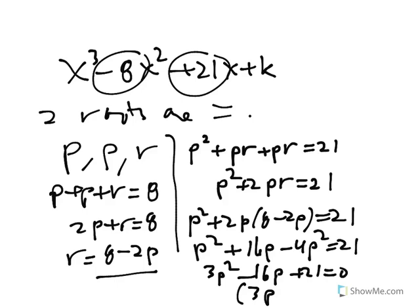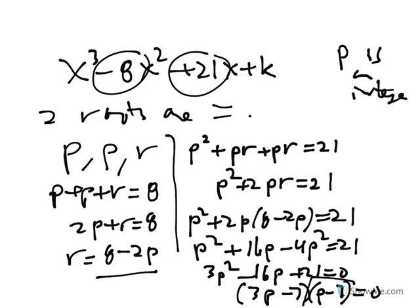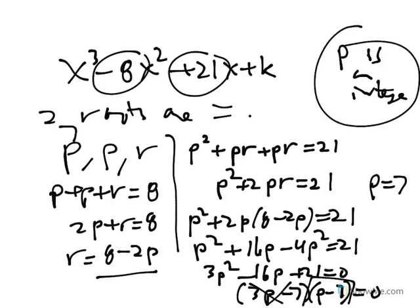This eventually turns into 3p squared minus 16p plus 21 equals 0, which factors into (3p minus 7)(p minus 3). Since they tell us p is an integer, we take p equals 3 and reject 7/3. So plugging in: r equals 8 minus 2 times 3, which is 2. The roots are 3, 3, and 2.